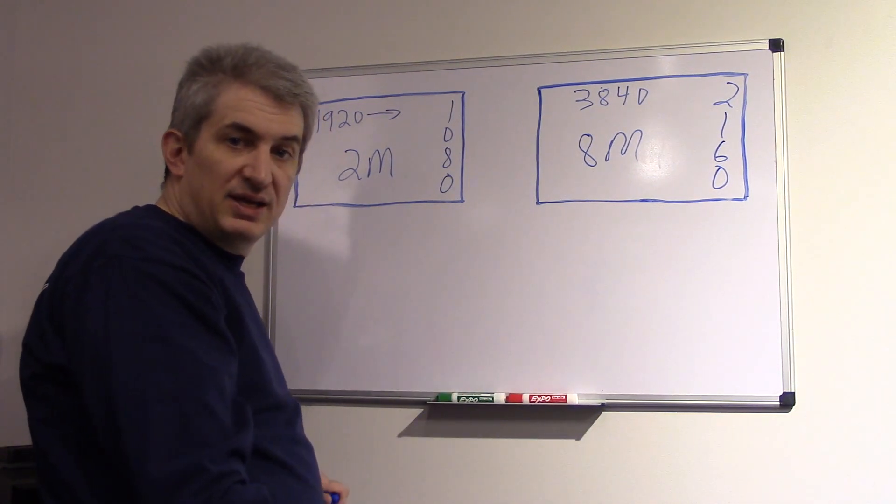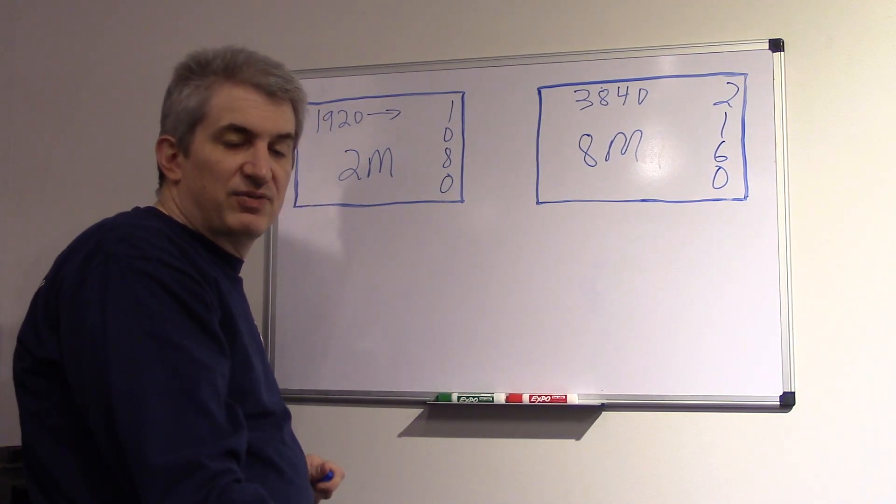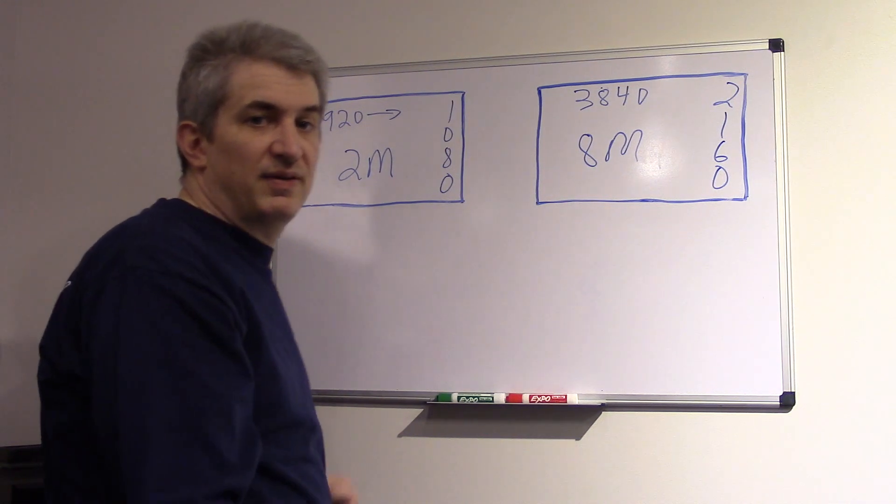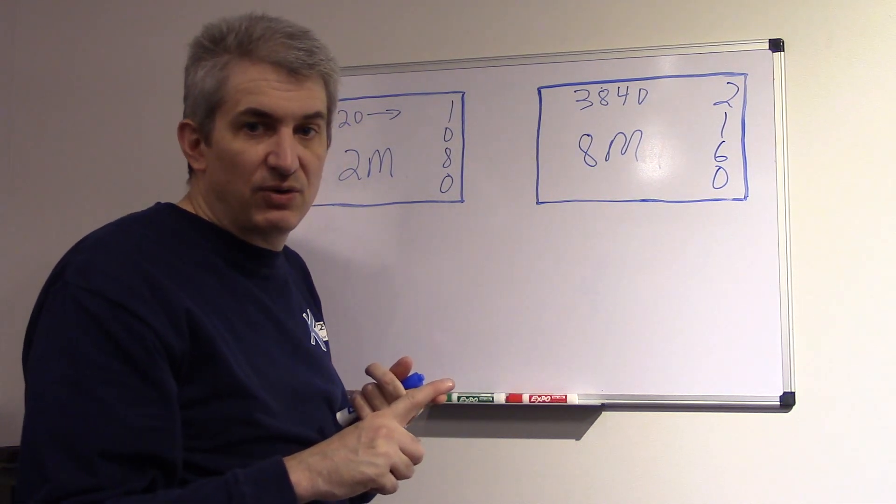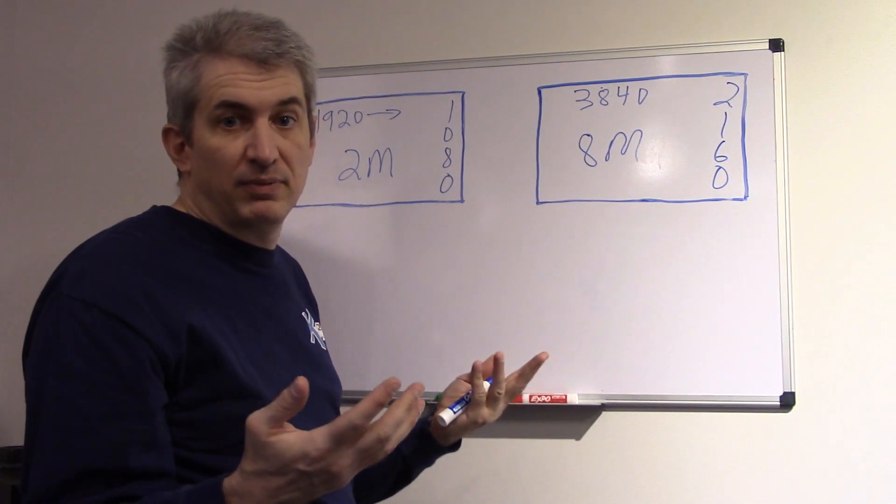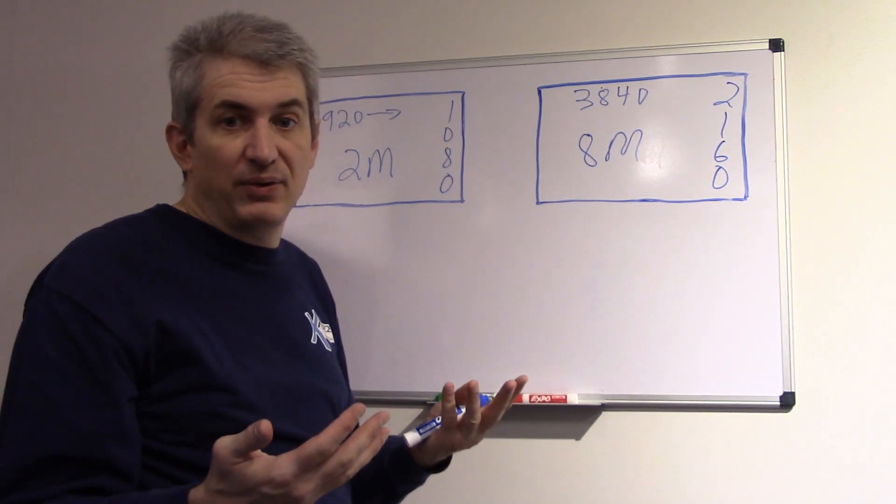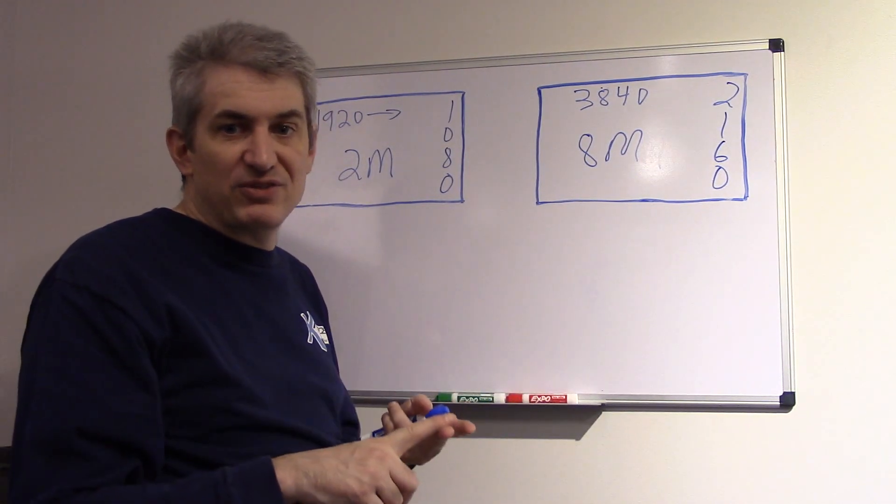So we have a 4K gamer, a computer we've specified for 4K gaming. And what we've done in that system is we've put the fastest video card and the fastest processor you can get. There's not much else we can do. Fastest video card, fastest processor.